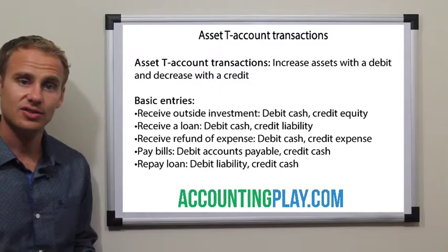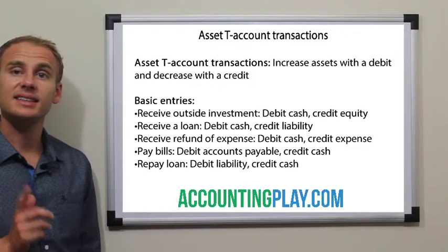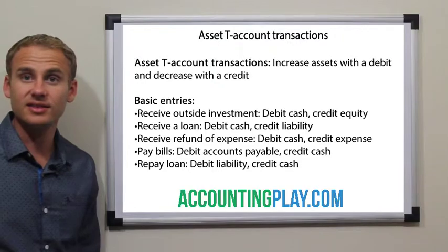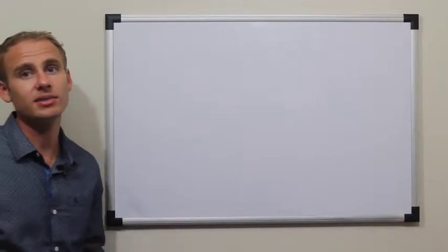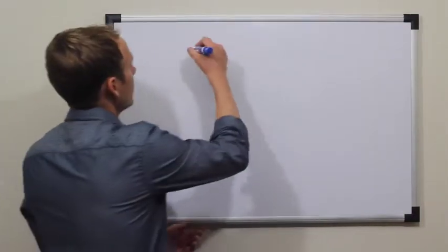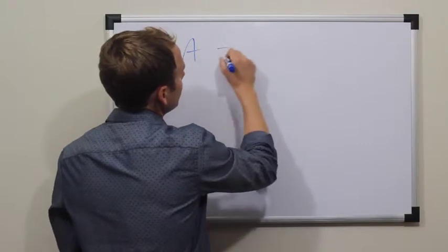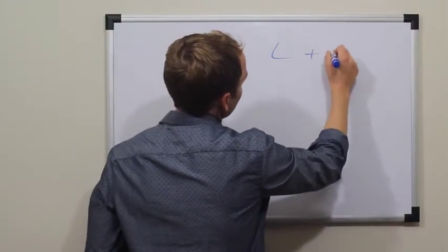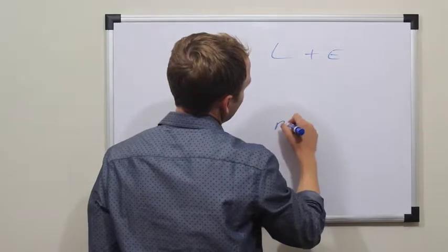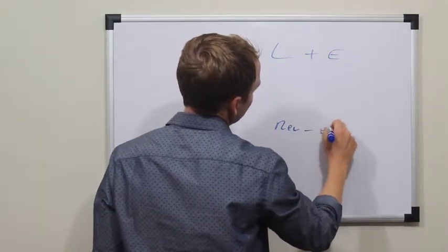Asset T-account transactions has everything to do with accounting, debits, and credits. Assets equals liabilities plus equity.